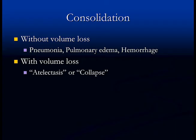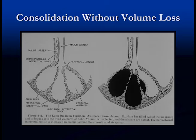Now we're going to talk about some diseases of the lung, starting with consolidation. Consolidation simply means solid lung — lung that is no longer containing air; it is of soft tissue density. There are two types: consolidation without volume loss, where the volume of the lung is maintained, caused by pulmonary edema, pneumonia, and hemorrhage — in these conditions the air spaces fill up with fluid. Then there's consolidation with volume loss, called atelectasis or collapse.